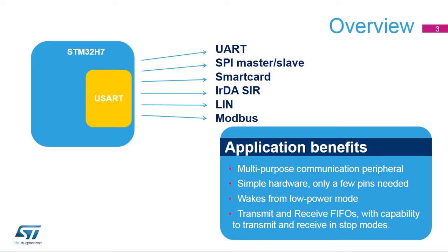The USART is a very flexible serial interface that supports asynchronous UART communication, SPI or Serial Peripheral Interface Master Mode, and LIN or Local Interconnect Network Mode. It can also interface with ISO IEC 7816 smart cards and IRDA devices. It also provides certain features that are useful when implementing Modbus communications.